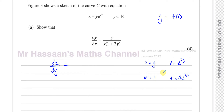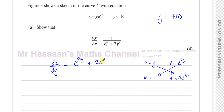Now applying the product rule as v times u-dash plus u times v-dash — I prefer this order since it matches the quotient rule — we get: e to the power of 2y times 1, plus 2e to the power of 2y times y. So dx/dy equals e to the power of 2y plus 2y times e to the power of 2y.